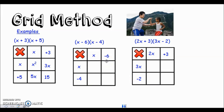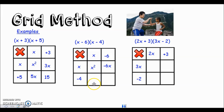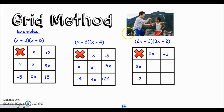Moving to the second example with minus numbers: x times x is again x squared. Minus six times x gives minus six x. In the bottom box, x times minus four gives minus four x. In the final box, minus six times minus four - remember you are multiplying, so negative times negative gives a positive result: plus 24. If you're not familiar with your negative number rules, make sure you go and find them out because you need them for this topic and many others.